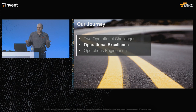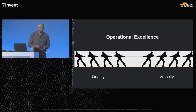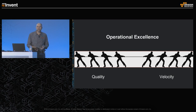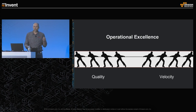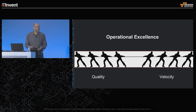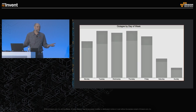Thinking about these two challenges has led us to our definition of operational excellence. You can think of it as a tension — ultimately it boils down to two fundamental concepts: the quality of the customer experience, which includes reliability, performance, security, and functional correctness; and the velocity at which our engineering teams can move and deliver innovation to those customers, because that's our competitive edge. You can see that when we're in the office, outages occur by day of week — and by time of day, 9 o'clock in the morning, let's start making changes to our production environment. We break things.